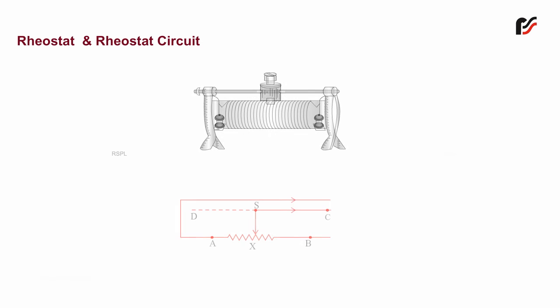A rheostat is a device used as a current controller in a circuit by changing its resistance. It is always placed in series with the circuit, as shown. The parts of a rheostat are the variable terminal and the fixed terminal.